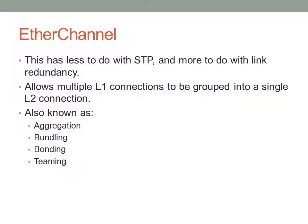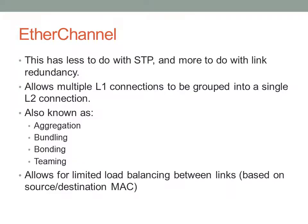EtherChannel is known by many names: link aggregation, NIC bundling, NIC bonding, NIC teaming. It also allows for load balancing between links and increased throughput if configured correctly. Strictly speaking, EtherChannel does not perform per-frame load balancing. By default, frames are balanced between links based on the source MAC address, though you can configure this based on source, destination, or a combination of source and destination MAC addresses. It is not a pure load balancing mechanism.